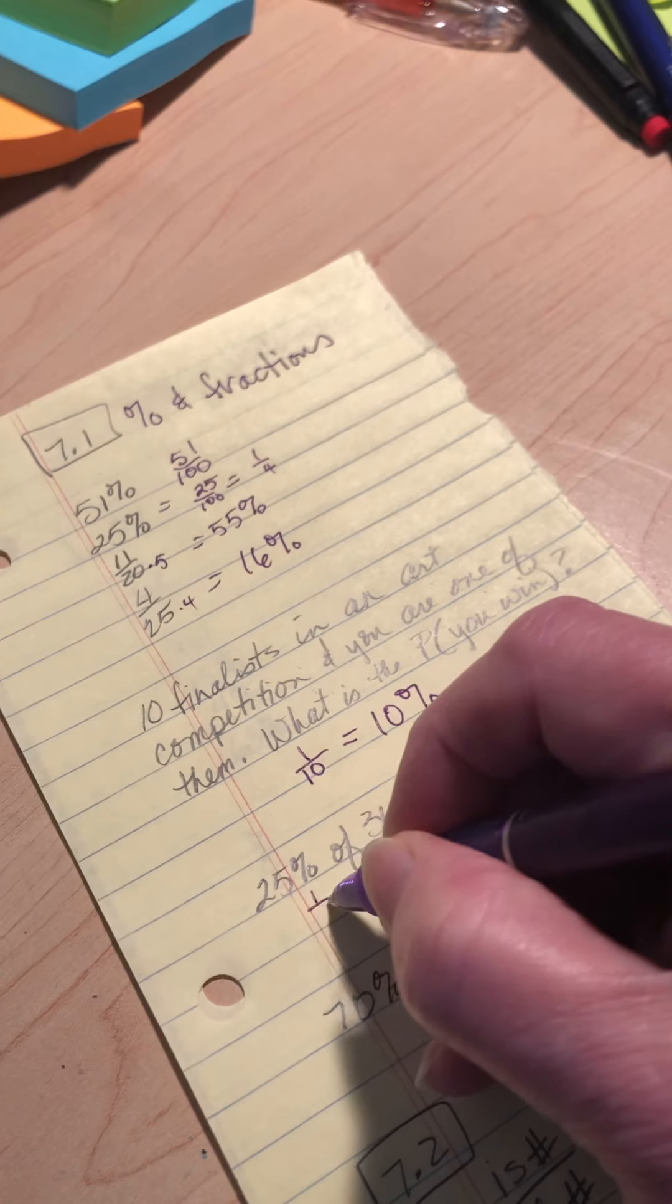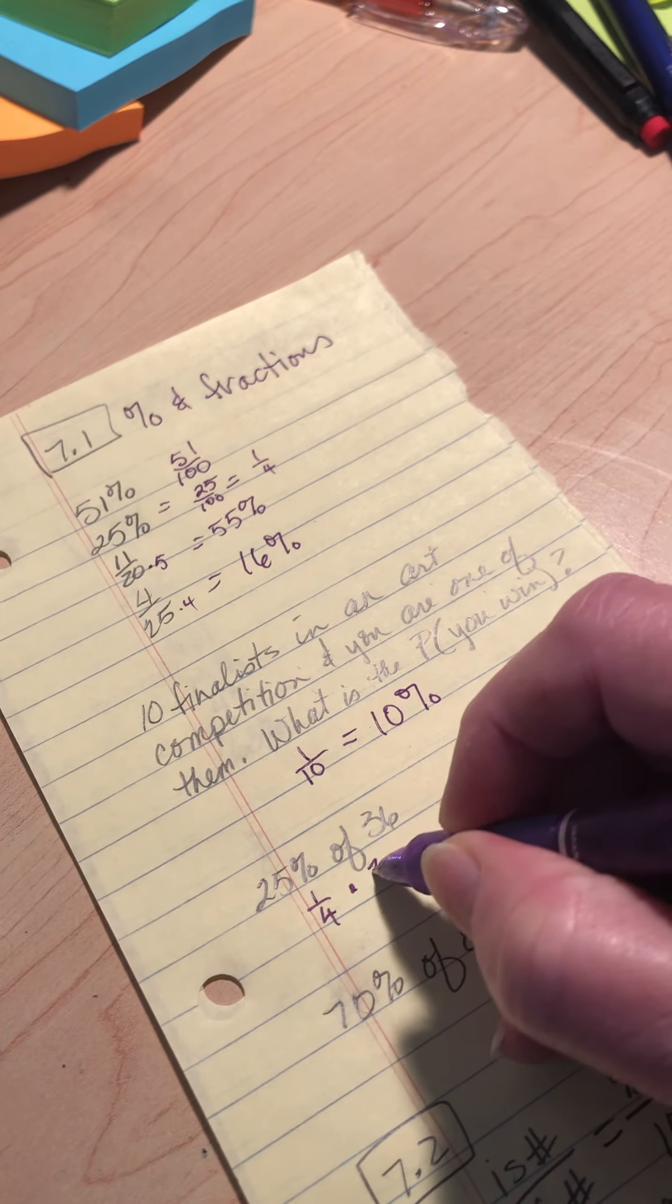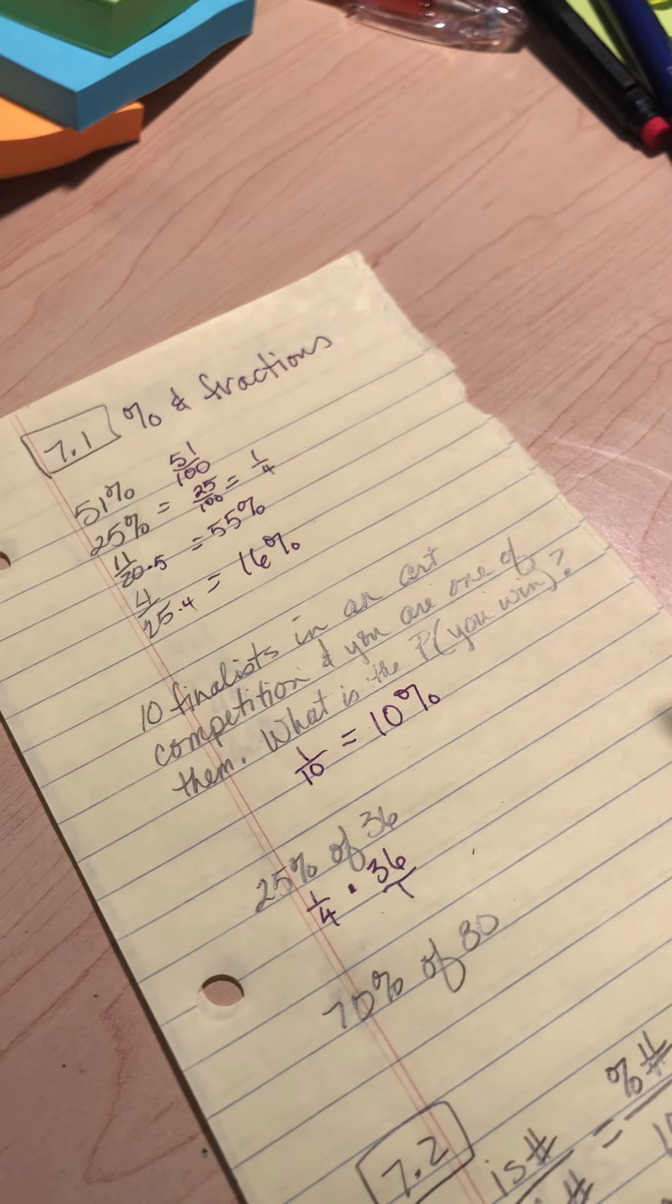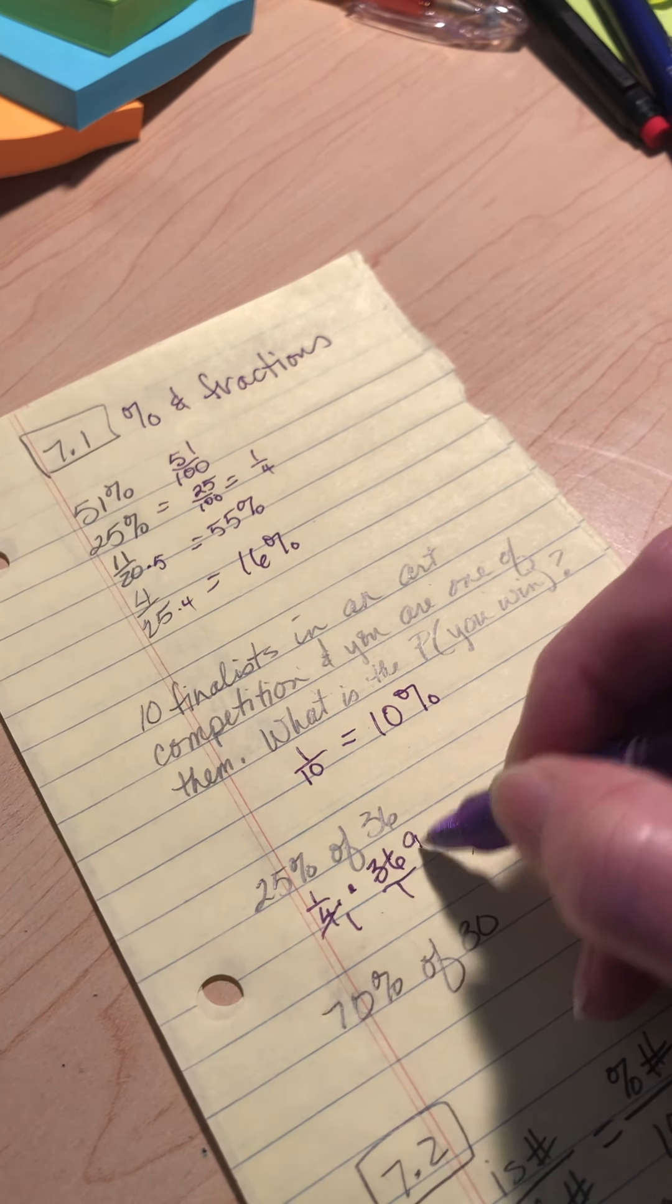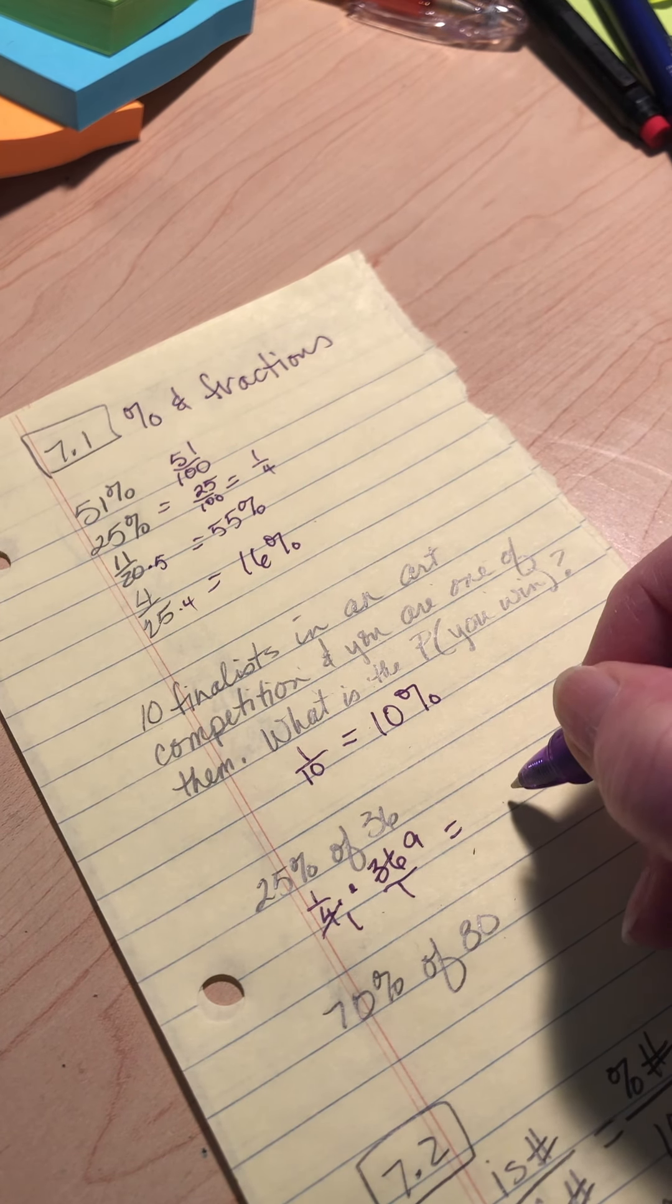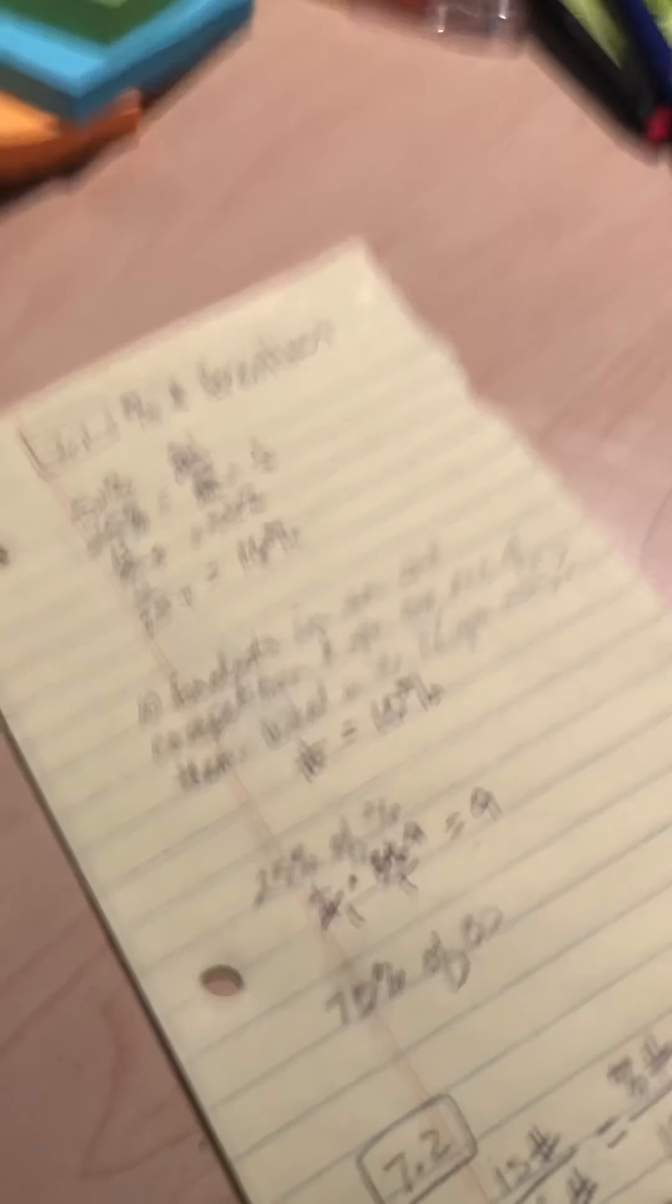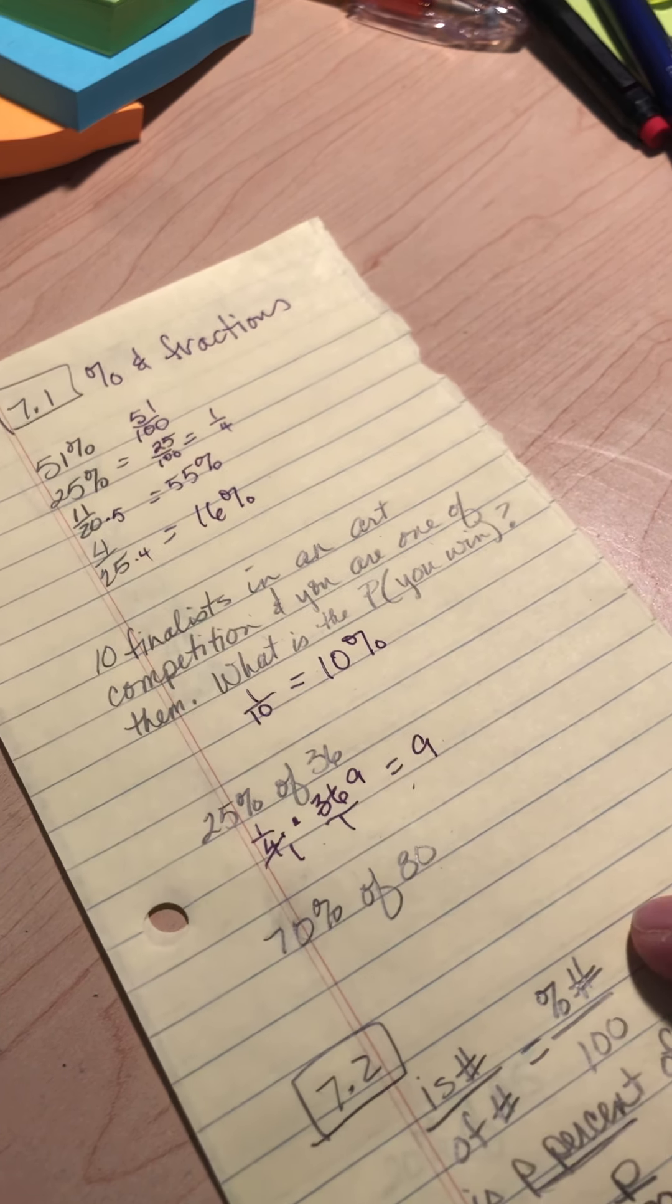So 25% is one-fourth, and you use all the things you know about fractions. One-fourth times, well, 36 becomes 36 over 1, and you can simplify that problem. You might even be able to do it in your head. One-fourth of 36 is 9. Use the things you know about fractions.